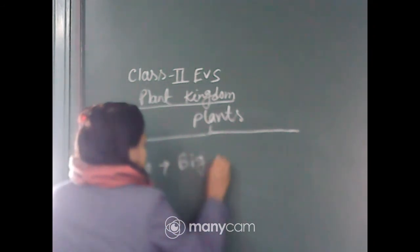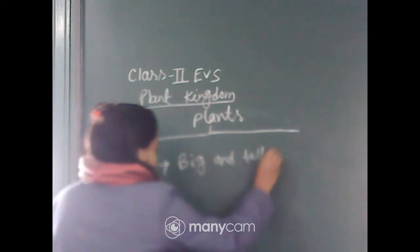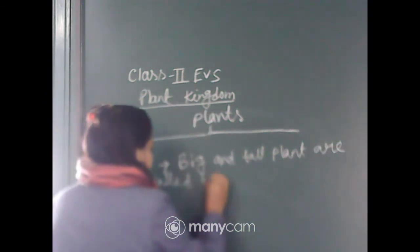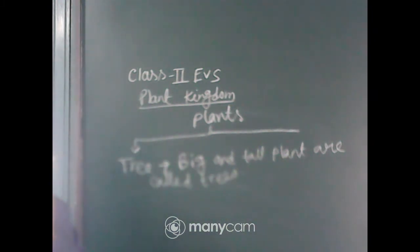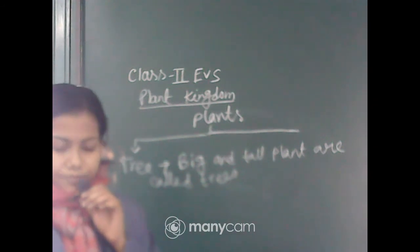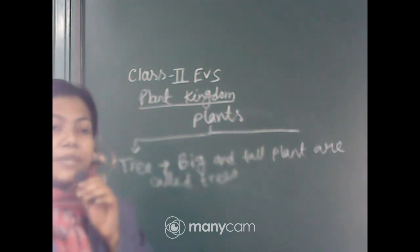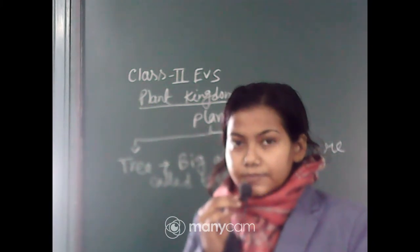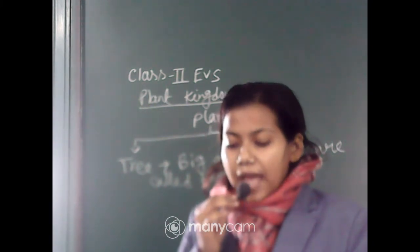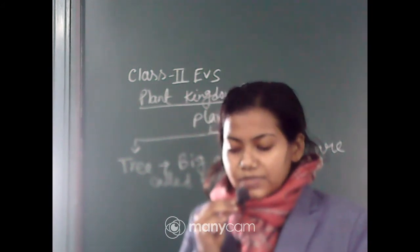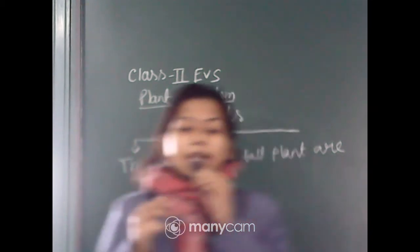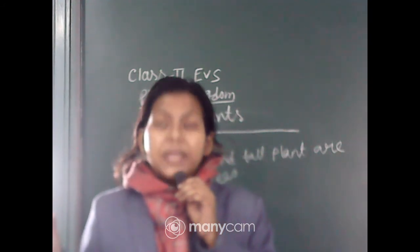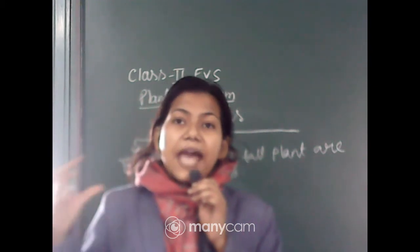Big and tall plants with strong brown stems are called trees. Shrubs and bushes also have brown stems like trees, but they are smaller than trees and have many branches.